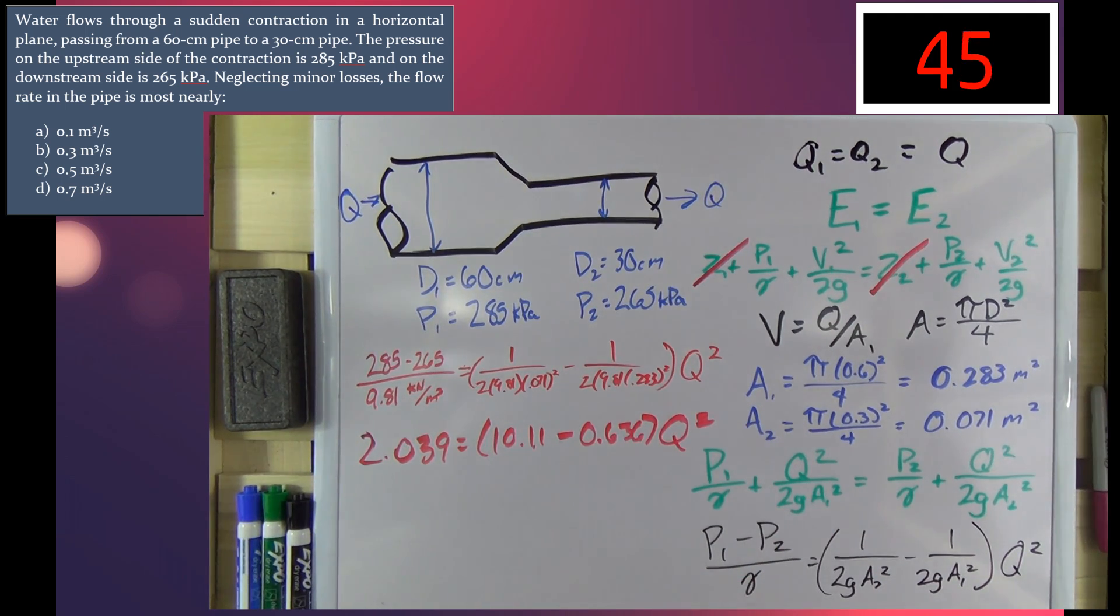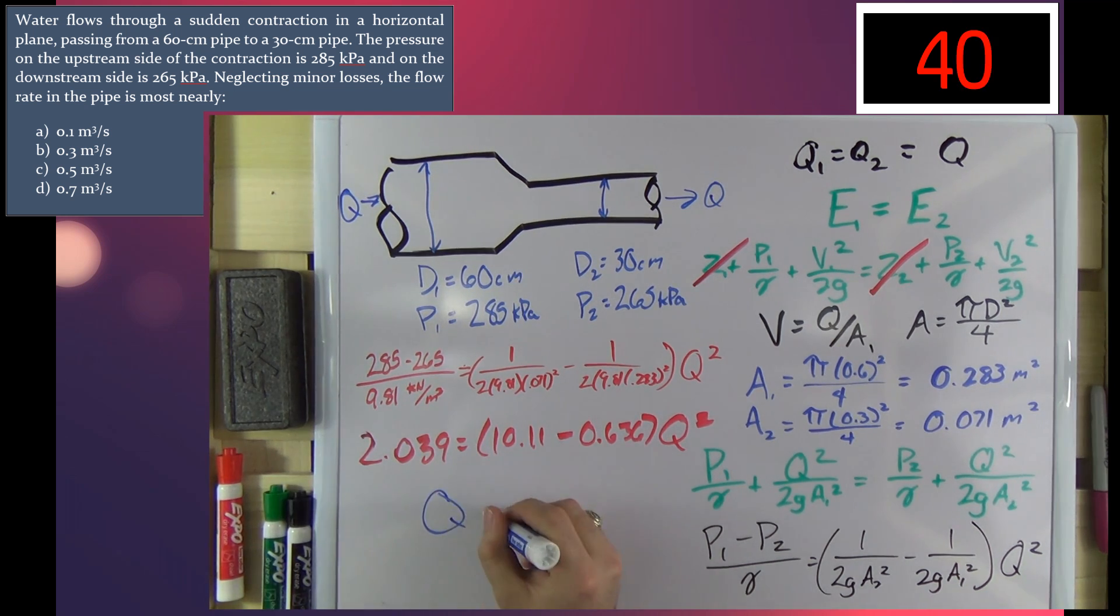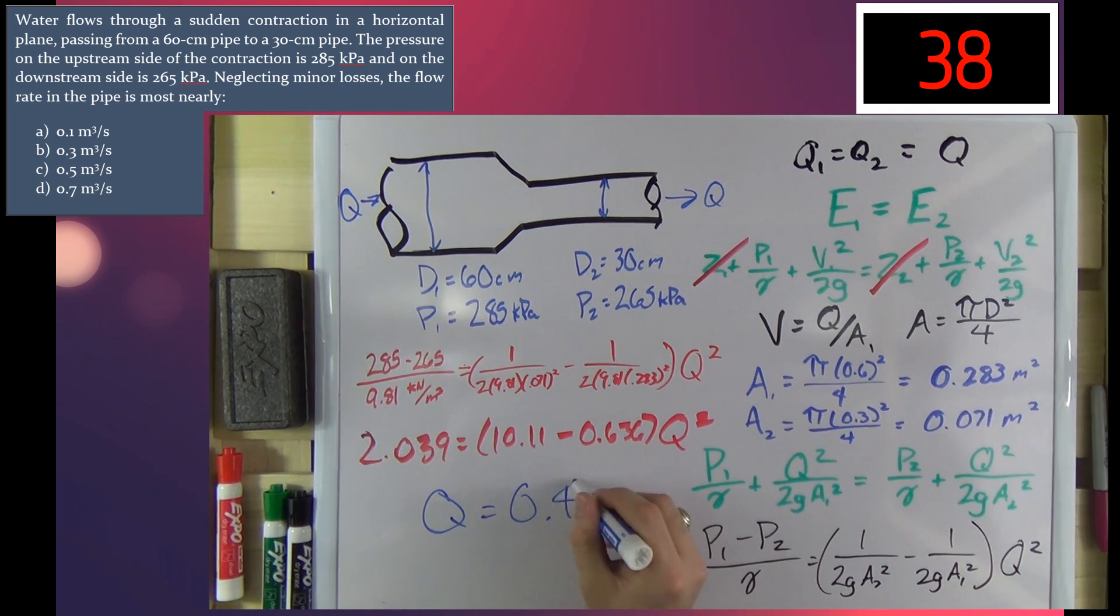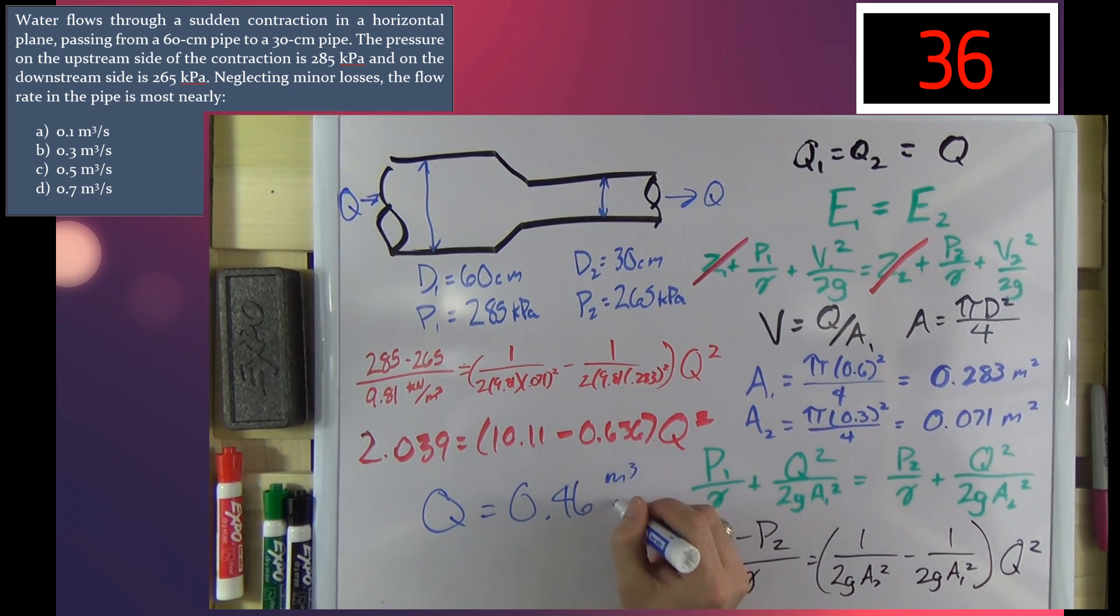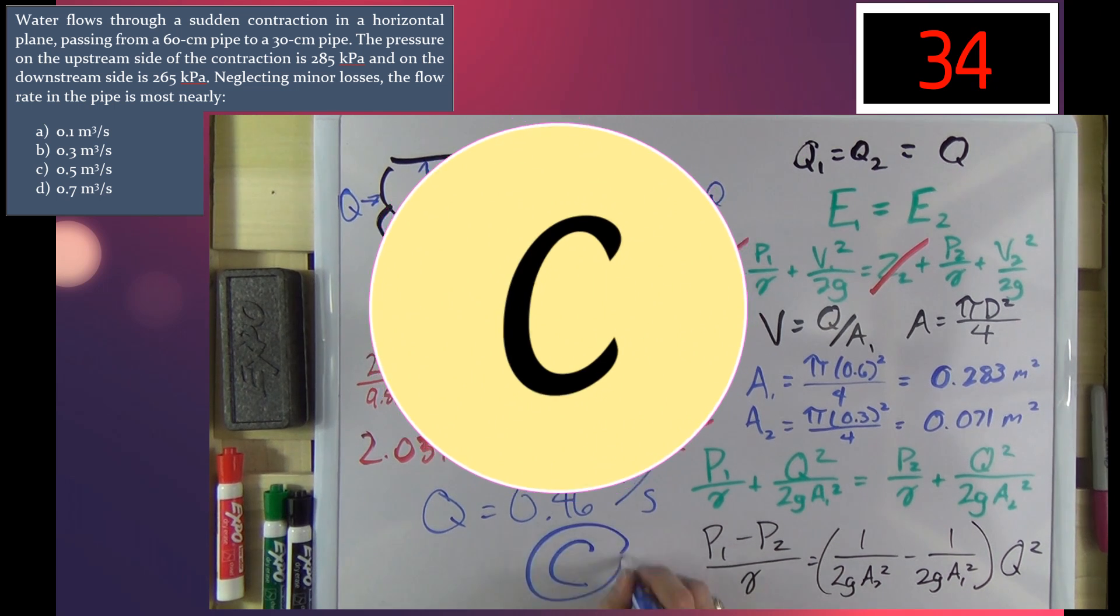Those numbers reduce down to 2.039 is equal to 10.11 minus 0.636 Q squared. And the big reveal, Q is equal to 0.46 cubic meters per second. Answer choice C.